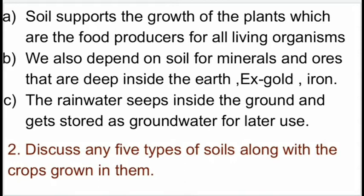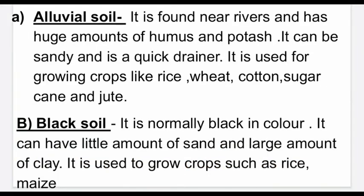Second question: discuss any five types of soils along with the crops grown in them. First one: alluvial soil is found near rivers and has huge amounts of humus and potash. It can be sandy and is a quick drainer. It is used for growing crops like rice, wheat, cotton, sugar cane and jute. Second one: black soil is normally black in color. It can have a little amount of sand and a large amount of clay. It is used to grow crops such as rice and maize.